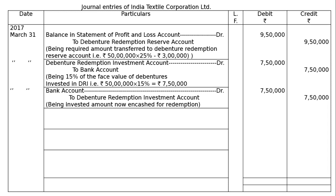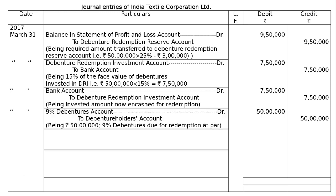The next entry: 9% Debentures account is debited to Debenture Holders account — Rs 50 lakhs in both debit and credit columns — being Rs 50 lakh 9% debentures due for redemption at par.